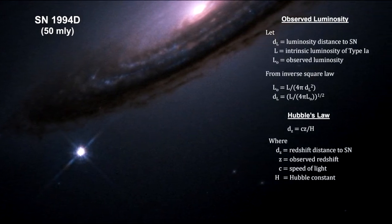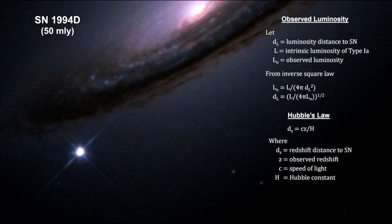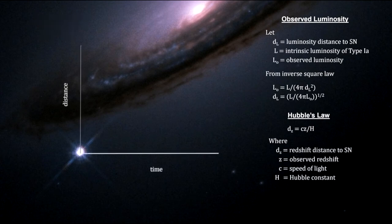Here's how it works. First, we measure the luminosity of a distant type 1a supernova, like SN1994D, and measure its redshift. Then we map the distance between us and the supernova over time.